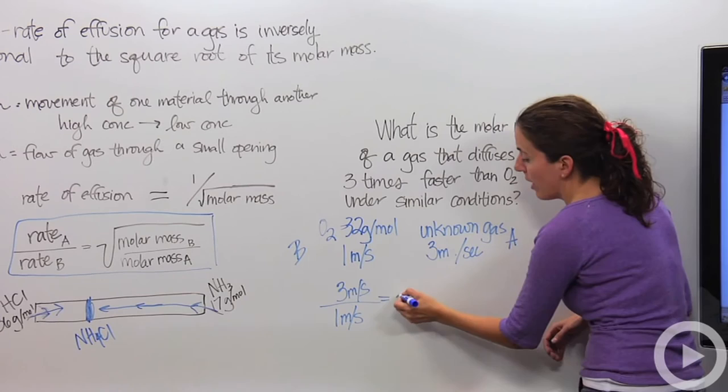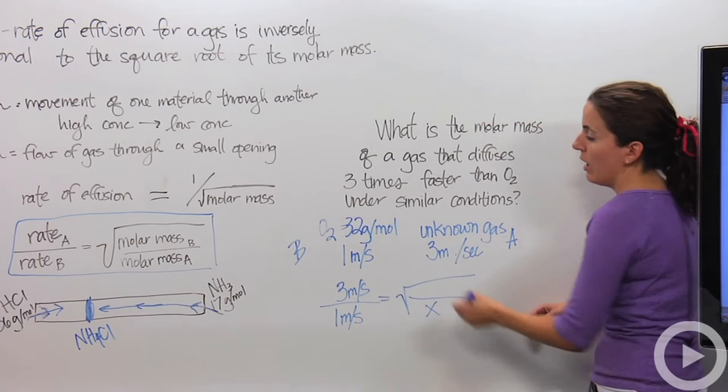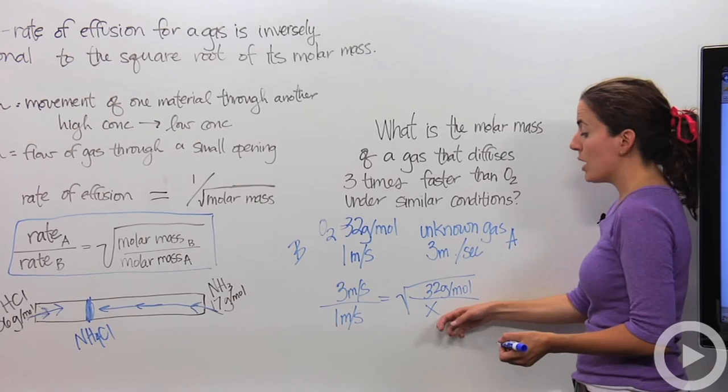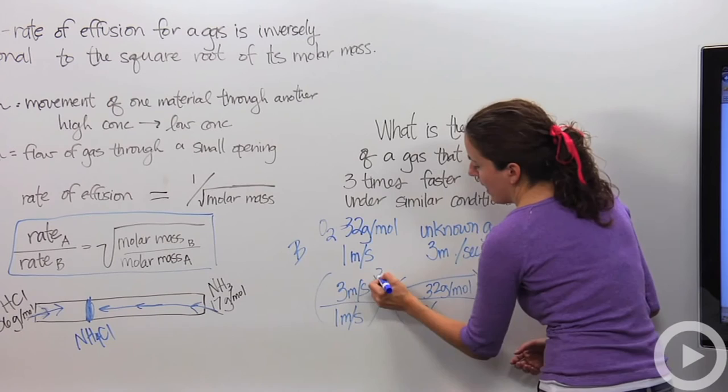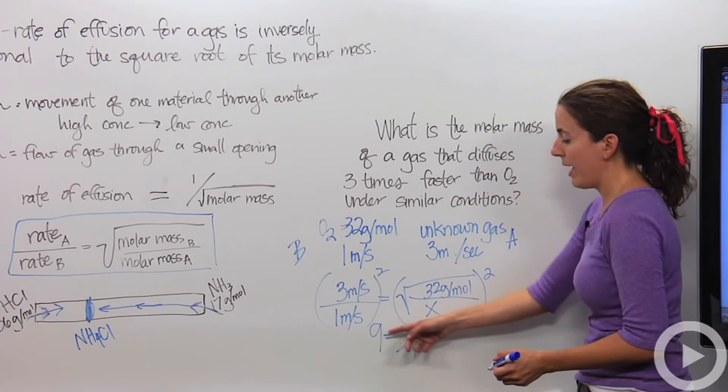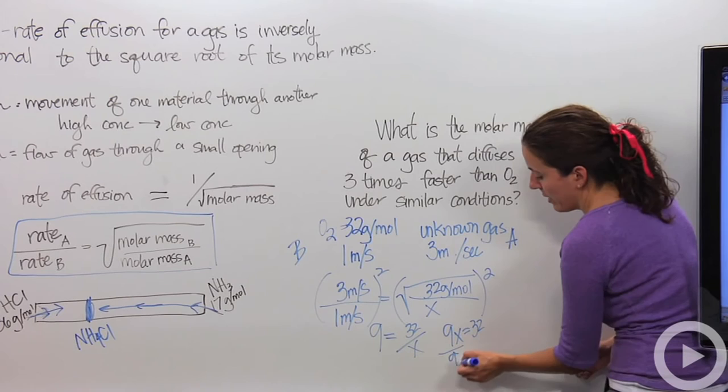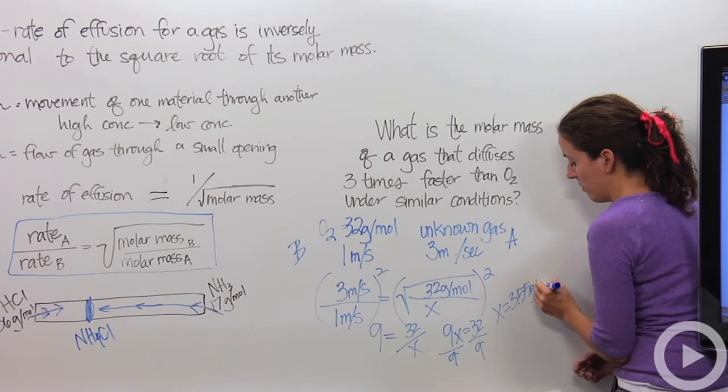And this is going to equal the square root of, and don't forget to flip them, molar mass of A, in this case we don't know, x, over the molar mass of B, in this case 32 grams per mole. So we want to solve what x is. Well, an easy way to do this is square both sides. And that's going to give me 9 equals 32 over x. So when we multiply x times 9, we get 9x equals 32. We divide both by 9.